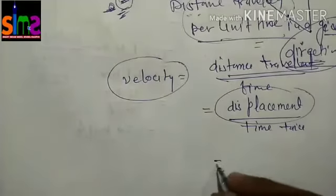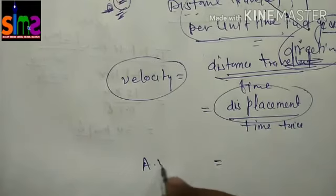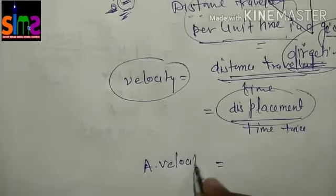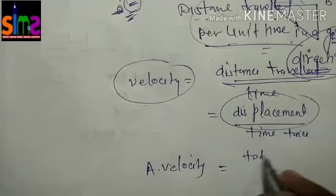Now let's talk about average velocity. If we talk about average speed, we calculate total distance upon total time. In this case, we have total displacement.